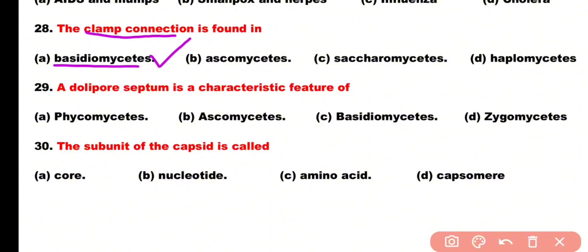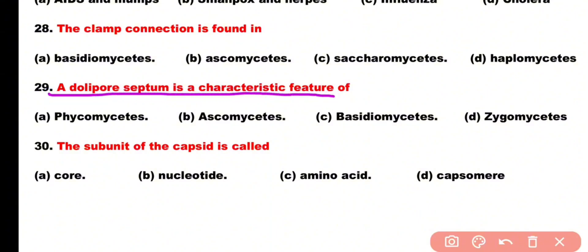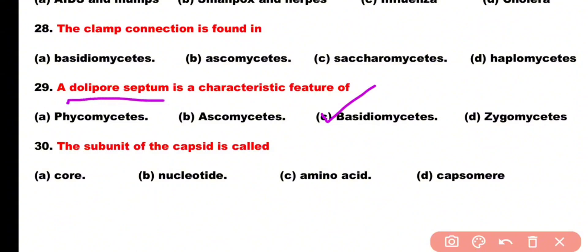Question number 29: Dolipore septum is a characteristic feature of: Phycomycetes, Ascomycetes, Basidiomycetes, or Zygomycetes. Correct answer is option C. In Basidiomycetes, the septa between hyphae have specialized divided walls called dolipore septum, which are present in Basidiomycetes.